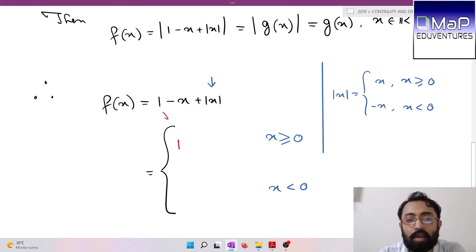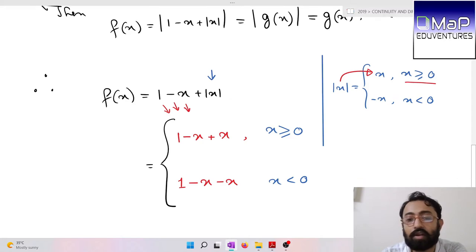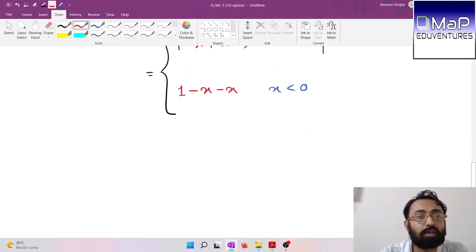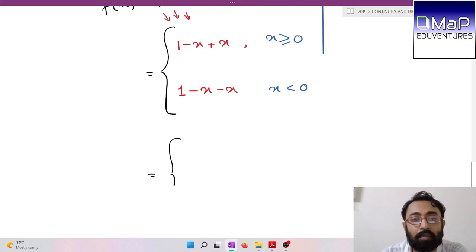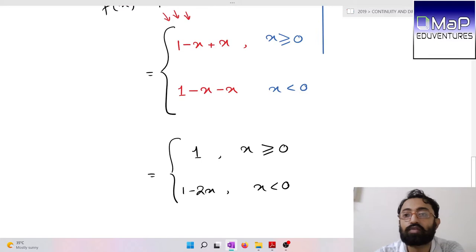When x is greater than or equal to 0, |x| = x, so f(x) = 1 - x + x = 1. And when x is less than 0, |x| = -x, so f(x) = 1 - x - x = 1 - 2x.